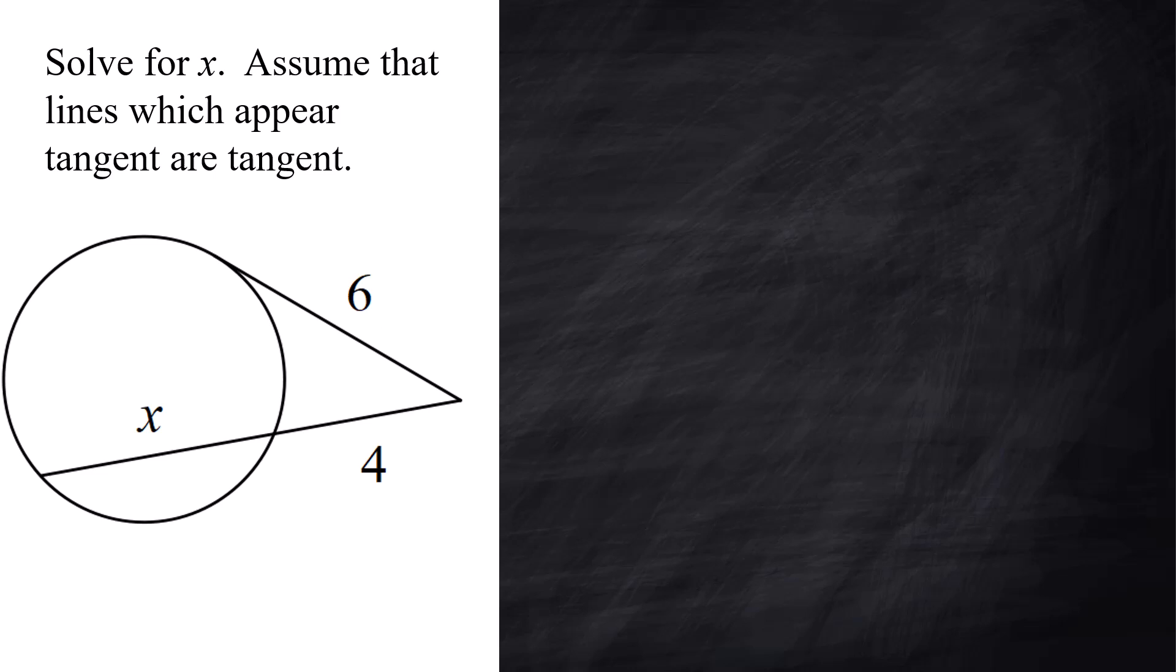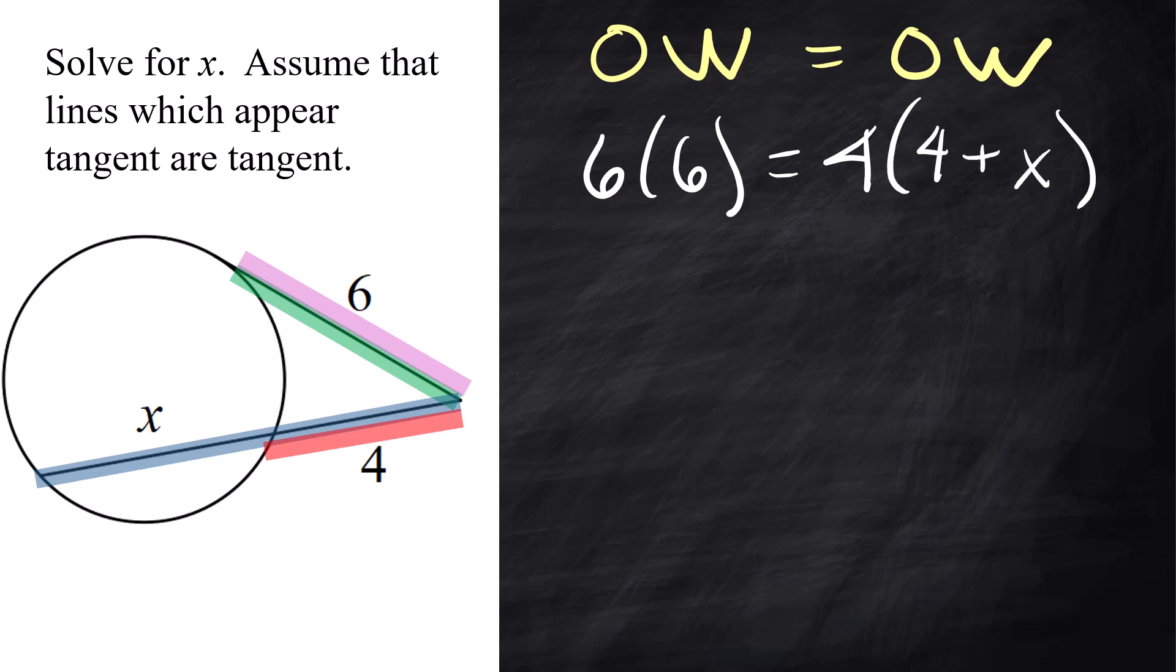Alright, this is where assume that lines that appear tangent are tangent comes into play because let's start out with our ow-ow. We are outside the circle, so it's ow-ow, outside. And the 6 is the outside, but it's also the whole thing. That's because the 6 is a tangent to the circle. Even if you don't understand the vocabulary, if you understand the picture and know what you're looking at, you can set up the math. The outside and the whole thing are the same for that one. The other one, the 4 and the 4 plus x will be the whole thing. A lot of people kind of gap out when they don't see an inside piece. So this is how you handle that kind of a problem.